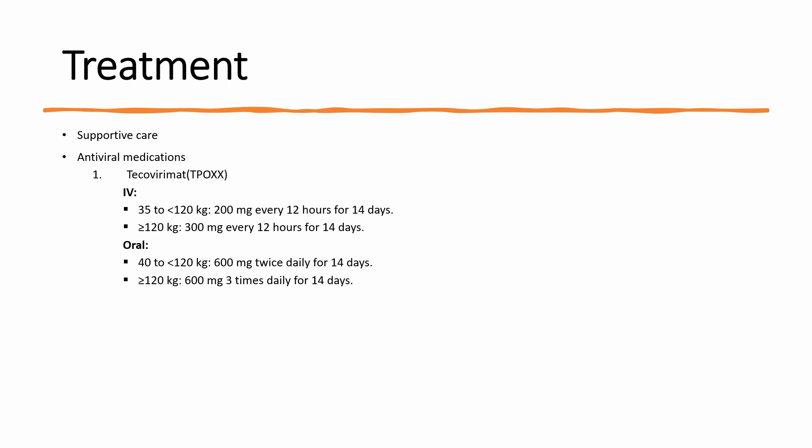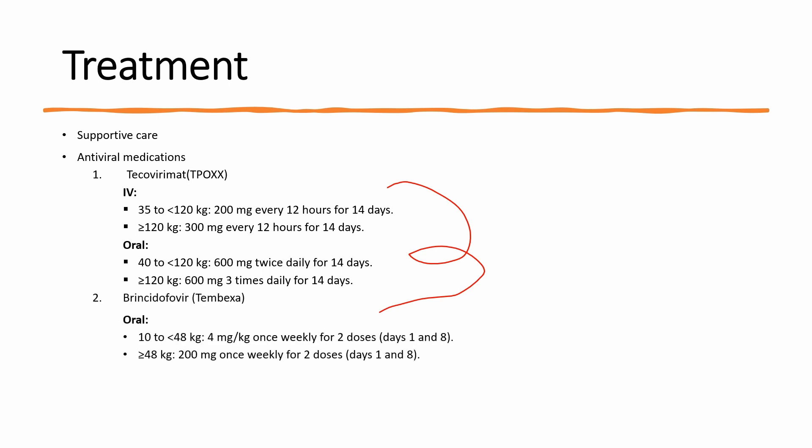The first antiviral is tecovirimat (TPOXX), available in IV or oral formulation. It is an inhibitor of orthopoxvirus protein, approved for treatment of smallpox in the United States in July 2018. The dose is weight-based and treatment lasts 14 days. The next medication is brincidofovir, approved for smallpox treatment in June 2021, available in oral formulation only. The dose is also weight-based and only two doses are required. Both tecovirimat and brincidofovir are available only through the CDC.